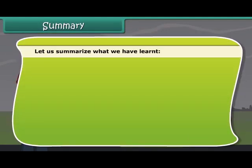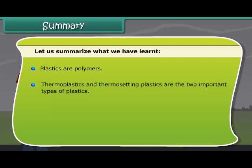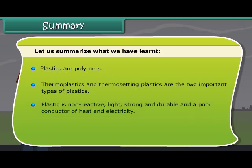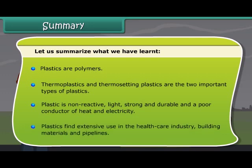Let us summarize what we have learned. Plastics are polymers. Thermoplastics and thermosetting plastics are the two important types. Thermoplastics are non-reactive, light, strong, durable and poor conductors of heat and electricity. Plastics find extensive use in the healthcare industry, building materials and pipelines.